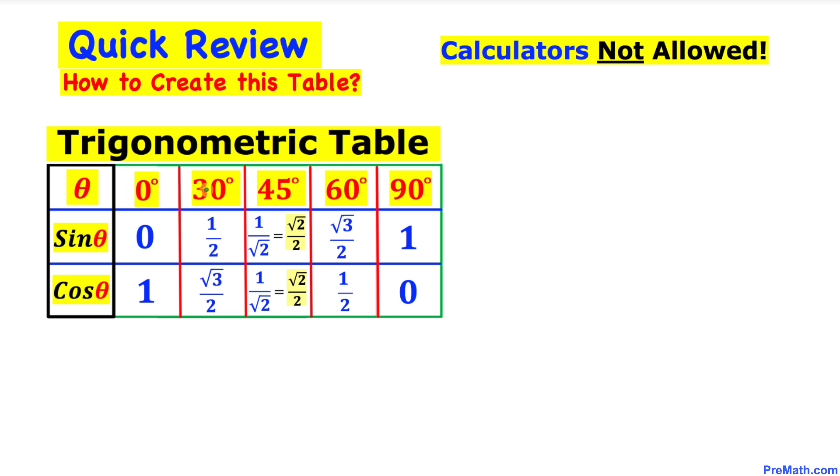0 degrees, 30 degrees, 45 degrees, 60 degrees, 90 degrees and their corresponding sine and cosine values, and we are not supposed to be using calculators of any kind.